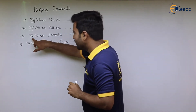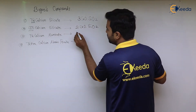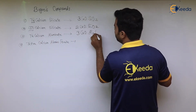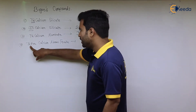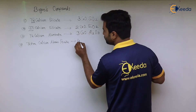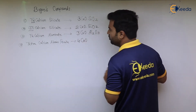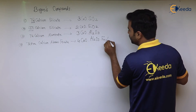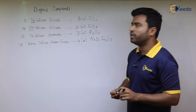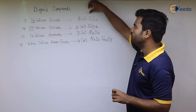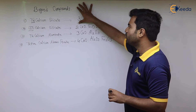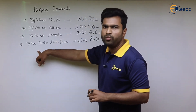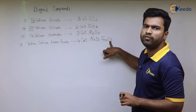For tri-calcium aluminate: tri is 3, calcium is CaO, and aluminate is Al2O3, giving the formula 3CaO·Al2O3. The last compound is tetra-calcium alumino ferrite: tetra means 4, calcium is CaO, alumino is Al2O3, and ferrite is Fe2O3. So the formula is 4CaO·Al2O3·Fe2O3. In summary: tri-calcium silicate is 3CaO·SiO2, di-calcium silicate is 2CaO·SiO2, tri-calcium aluminate is 3CaO·Al2O3, and tetra-calcium alumino ferrite is 4CaO·Al2O3·Fe2O3.